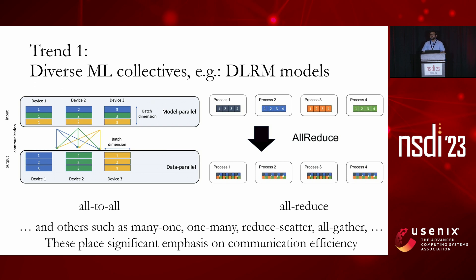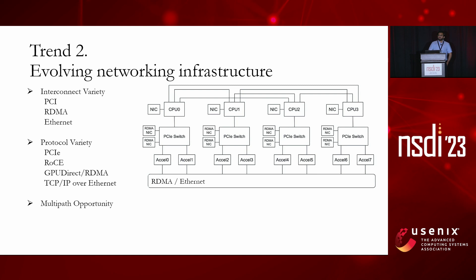The first trend, in essence, is that there are diverse ML collectives — exemplified by DLRM models. With more hybrid modes of parallelism, there are additional collectives such as many-one, one-many, reduce-scatter, and all-gather, which are quite network intensive. This places significant emphasis on communication efficiency. The second trend is that as models become network-bound, the networking infrastructure is also evolving with a vast variety of interconnects and protocols such as PCIe, RDMA, Ethernet, RoCE, and GPU Direct. The key takeaway is that there is a lot of heterogeneity and multipath opportunity in networks today.